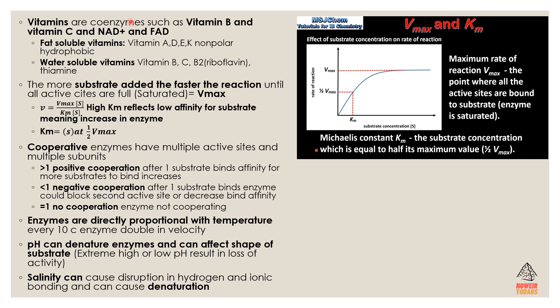Vitamins are coenzymes — examples include vitamin B, vitamin C, NAD+, and FAD. There are two types of vitamins. Fat-soluble vitamins are non-polar and hydrophobic, such as vitamins A, D, E, and K. Water-soluble vitamins include vitamin B, vitamin C, vitamin B2 (riboflavin), and thiamine.